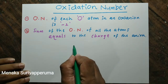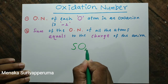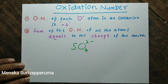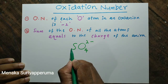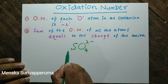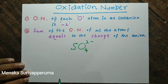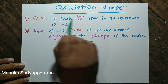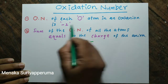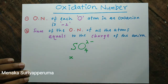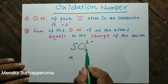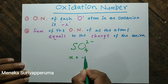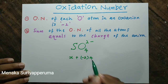Let's see. This is the SO4 2-minus anion. Now we are going to calculate the oxidation number of this sulphur. Suppose it is X. Tip number one: each oxygen atom in an oxo anion is minus two. There are four oxygen atoms, each minus two. Therefore, minus two into four.